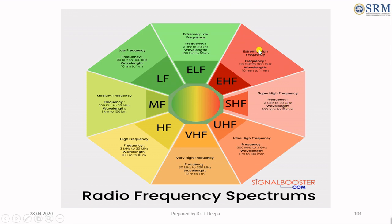Extremely high frequency, also called millimeter wave because of its wavelength of 10 mm to 1 mm, has a frequency range from 30 GHz to 300 GHz. EHF is also called millimeter wave.